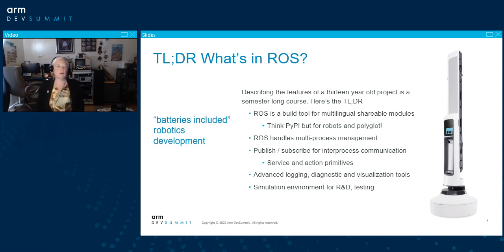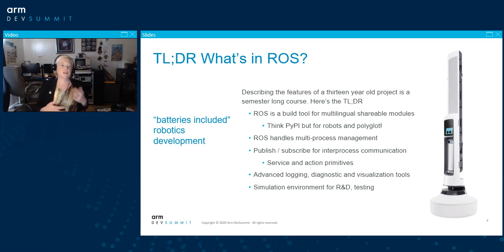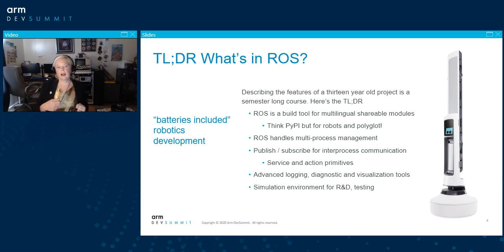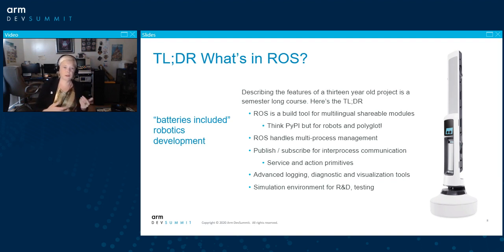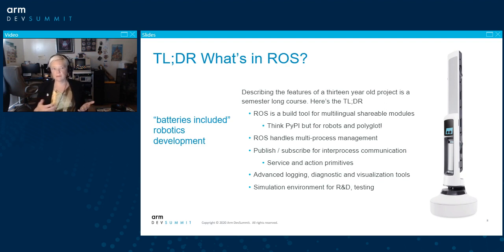So, TLDR — what's in ROS? Describing the features of a 13-year-old project is beyond the scope of a semester-long course, but here's the short version. ROS has a build tool for multilingual shareable modules — think of it as basically pip but for robots and polyglot. ROS handles all your multi-process management, defines your publish-subscribe system for inter-process communication, and defines high-level APIs for async and synchronous communication between robot components. There are utilities for logging, diagnostics, and visualization, plus simulation tools for testing. It's just batteries-included robotics development.